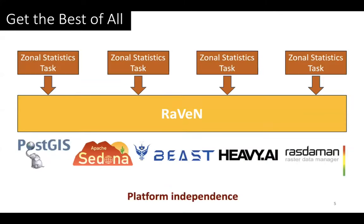This is where Raven comes in. Put very briefly, Raven is a framework that abstracts zonal statistics tasks and enables their unified execution across multiple spatial systems. This liberates users from relying on a single system and empowers them to choose the best system for their given task every time.